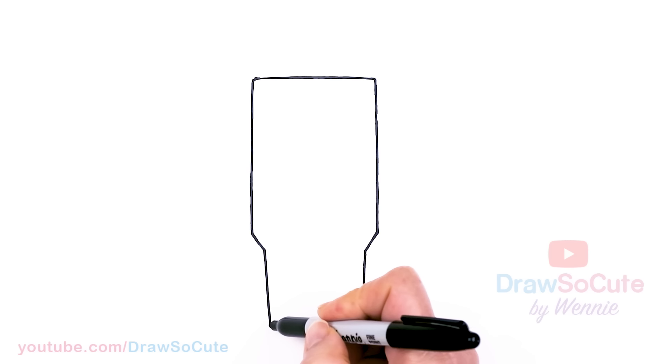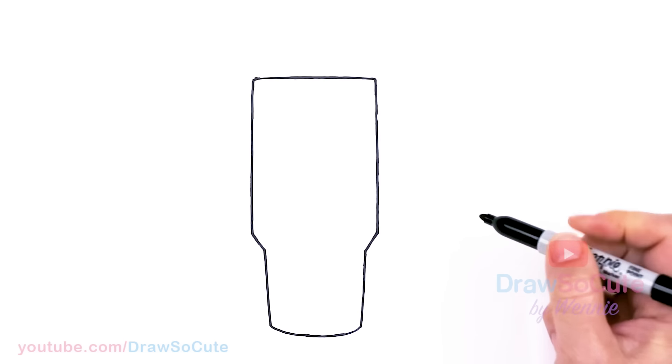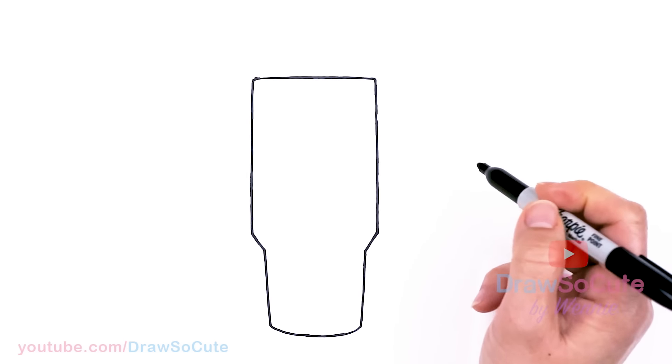And then we can go ahead and connect it with a curve for the bottom. Okay, so we have our basic tumbler shape in.